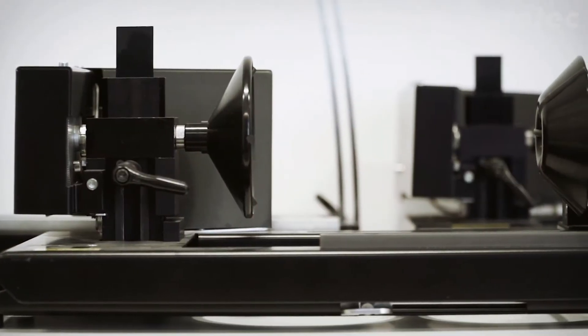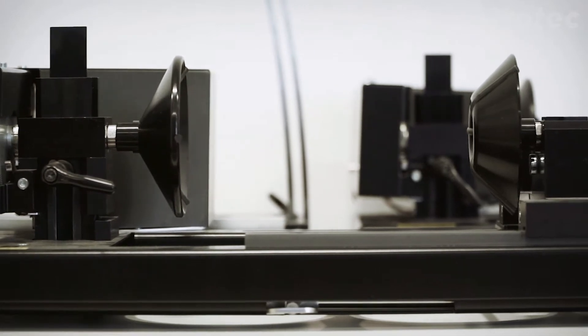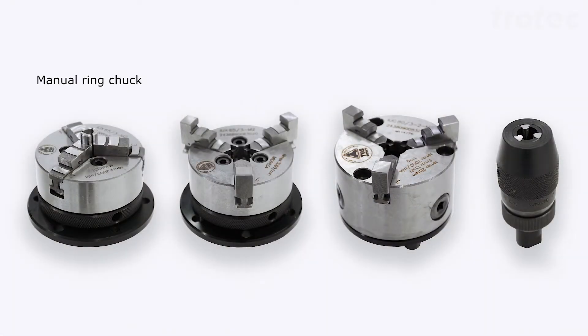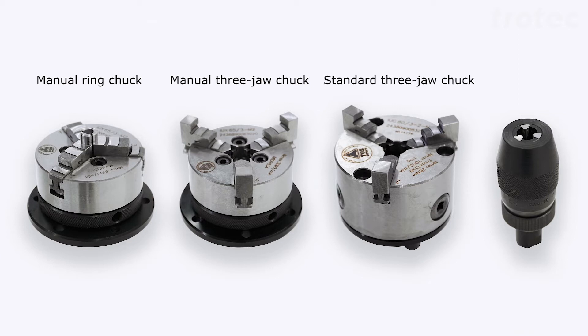There are other attachment fixtures than the cones. We have the manual ring chuck, the manual three jaw chuck, the standard three jaw chuck and the drill chuck. These are used depending on the cylindrical object.